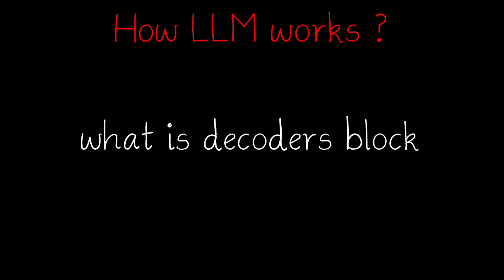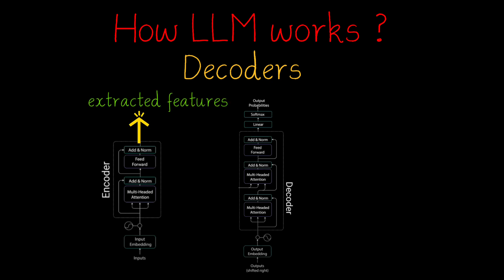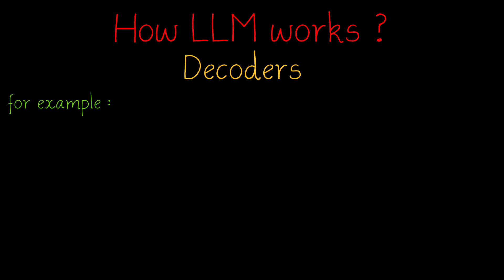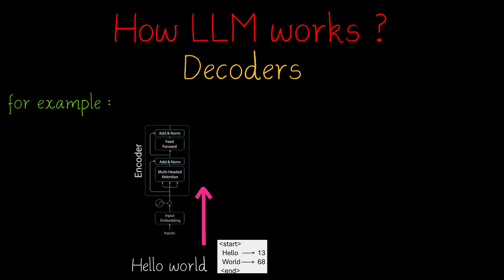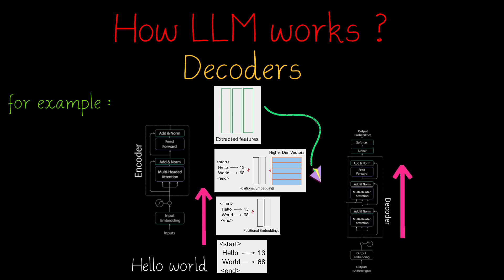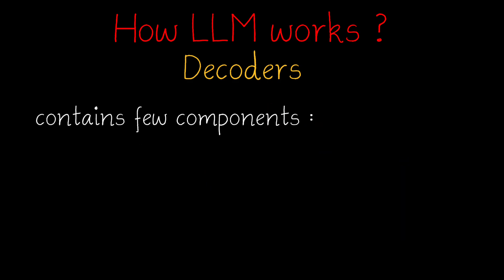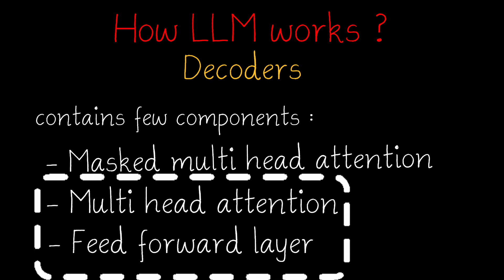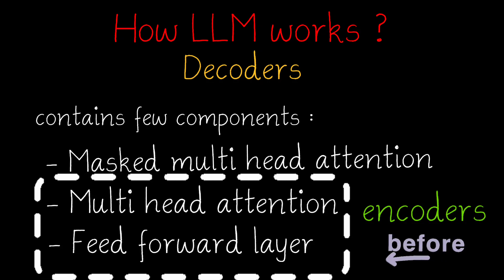Next, let's understand the decoder block. Decoder blocks receive the features extracted by the encoder blocks and use those extracted features to generate the output, generating one word at a time. For example, 'hello world' is given as input to the encoders, then the encoder extracts relevant features which are used by the decoder to generate an output. Decoders also contain a few components: masked multi-head attention layer, multi-head attention layer, and feed-forward layer — the same as in the encoders we discussed previously.